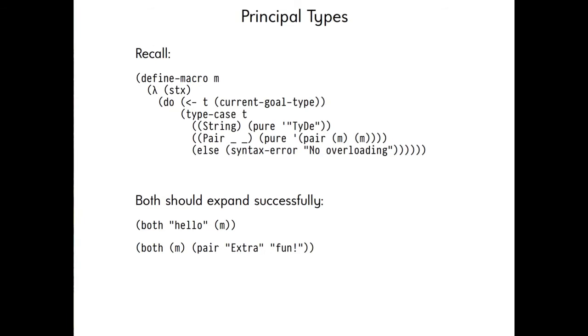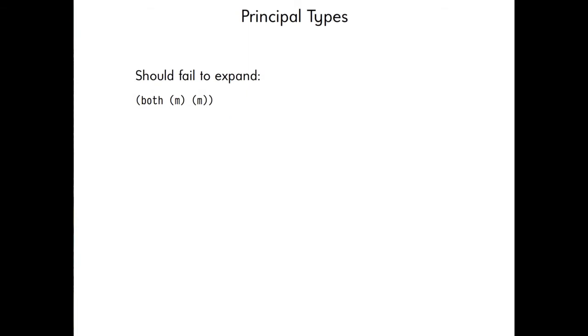So, returning to our definition of the macro M, if we have these two invocations, what we really want is for both of these to expand successfully. So both of hello and M, well, when we invoke M, we see that the current goal type is string. And so we're going to emit TID. Similarly, with this M, we can see that the goal type is a pair. And so we're going to emit the pair constructor. And then in both of these cases, we can see the goal type is a string. So we emit TID again, we get TIDY, TIDY, extra fun. And I think also a good specification is that this particular expression should fail to expand. Or in other words, we should not get an expression out of it, which is both of M and M. It may be in a context that forces its type, and that would be okay. But just alone, as the right hand side of a top level definition, we definitely don't want to allow this.